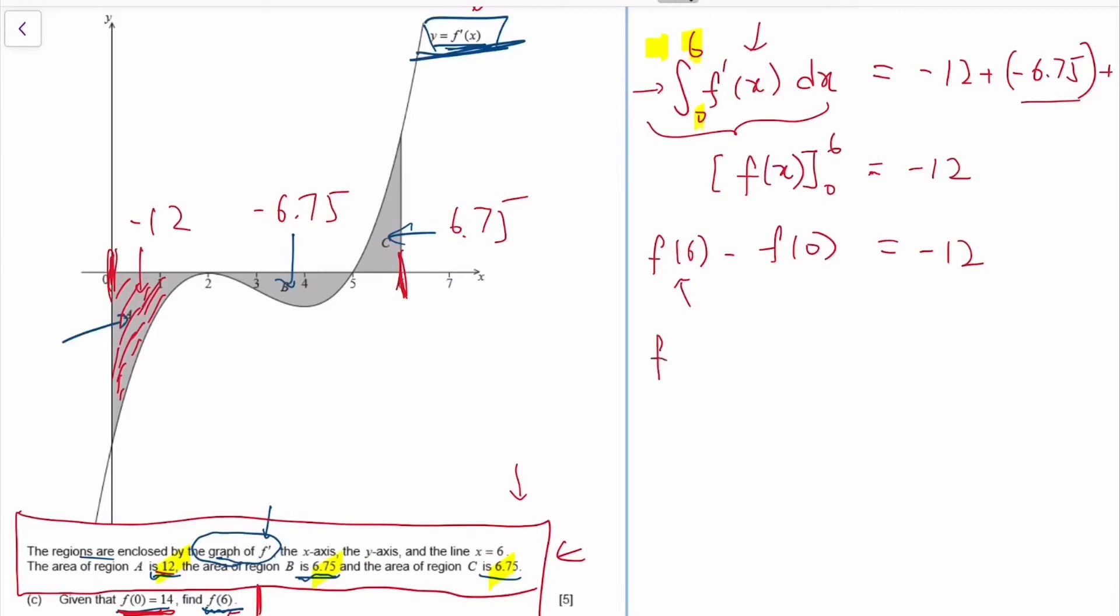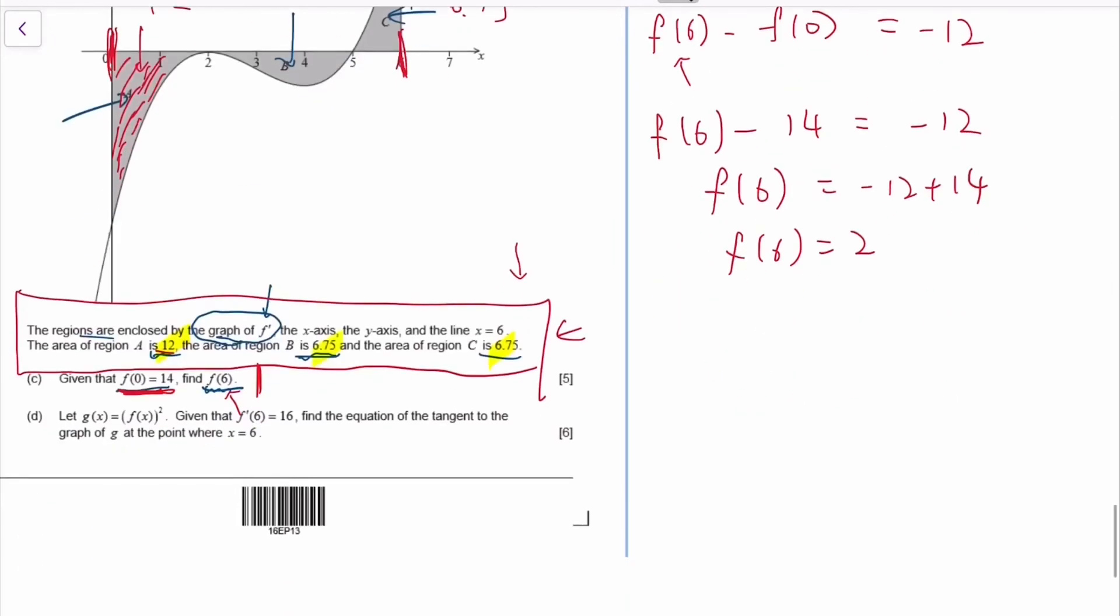But let's finish it. F(0) is given to be 14, so F(6) is 2. Okay, so that finished part C.